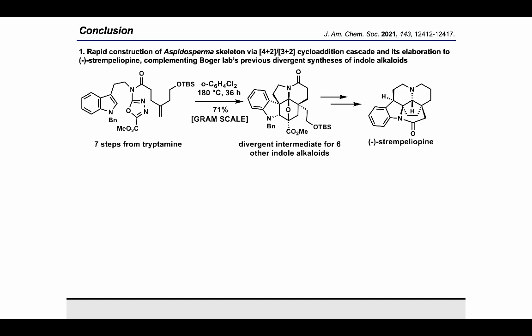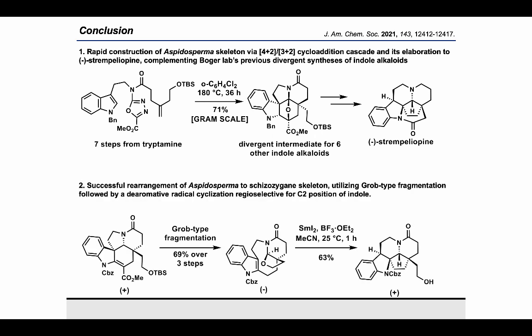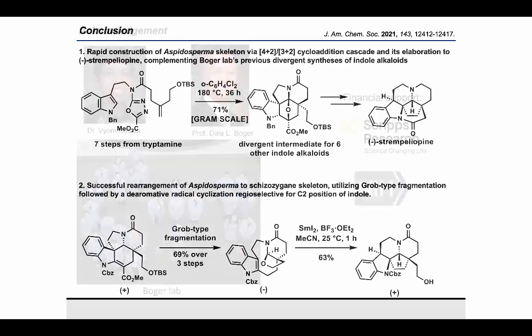In conclusion, we successfully affected a rapid construction of the spermostrychnos skeleton via a 4+2/3+2 cycloaddition cascade and the elaboration of its cycloadduct onto strempeliapine. This complements the Boger lab's previous divergent synthesis of indole alkaloids to culminate in the total synthesis of seven different classes of indole alkaloids from a common intermediate. Key to the completion was the successful rearrangement utilizing Grob-type fragmentation followed by a dearomative radical cyclization regioselective for the C2 position of the indole for formation of a quaternary center.